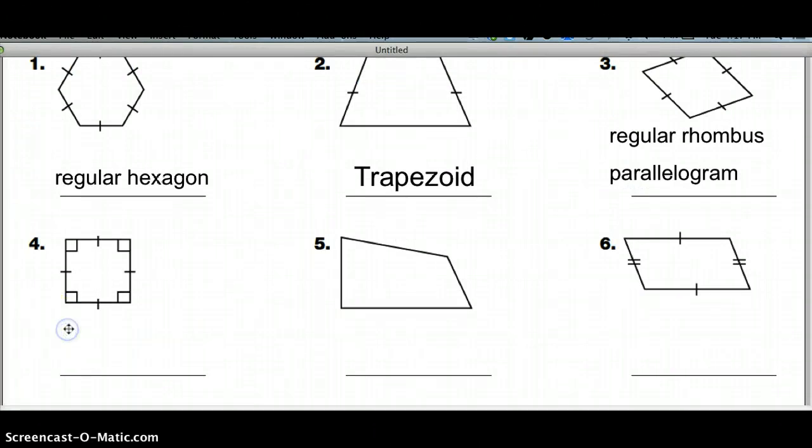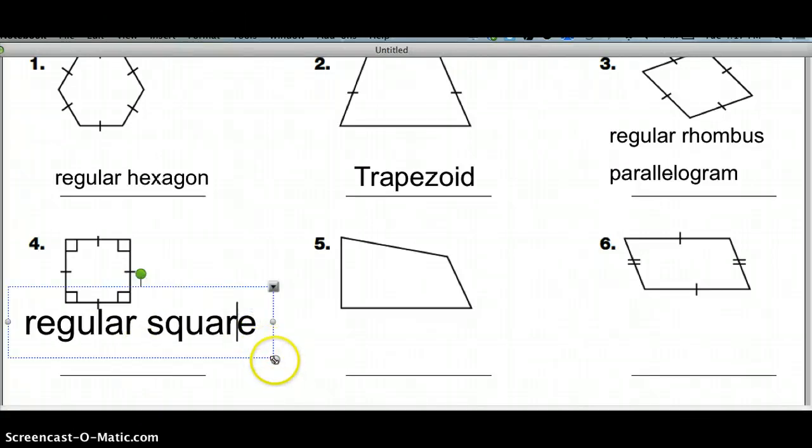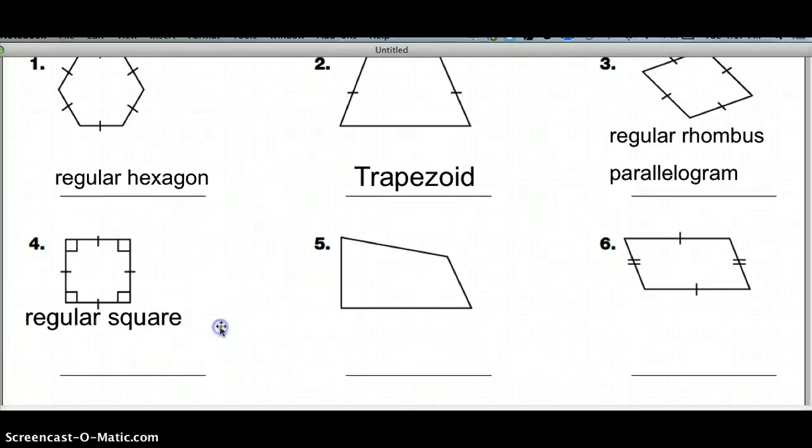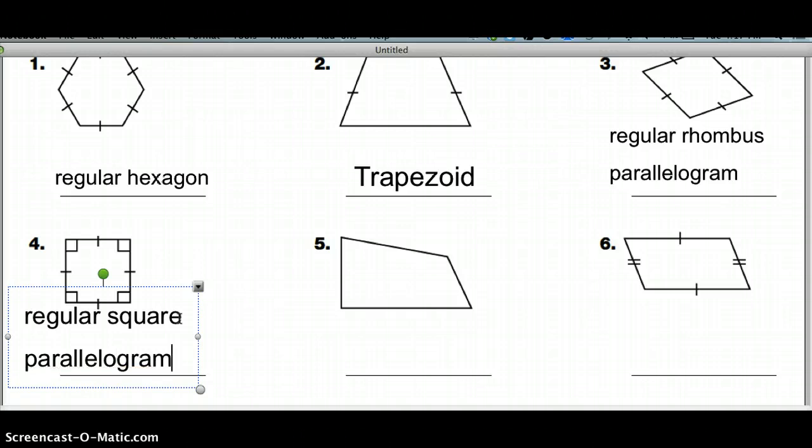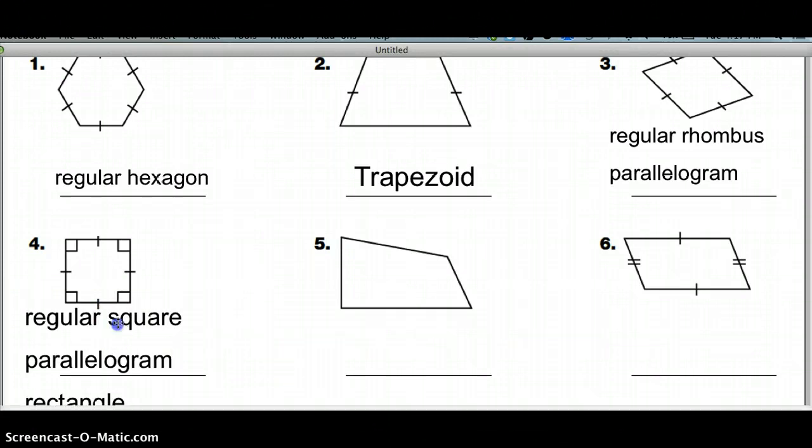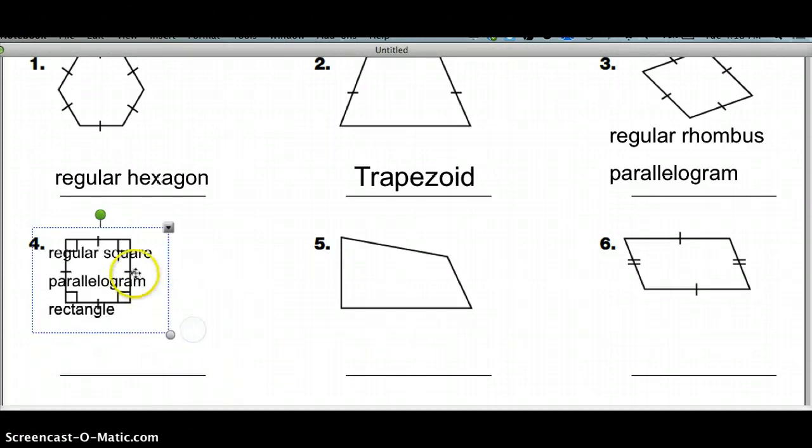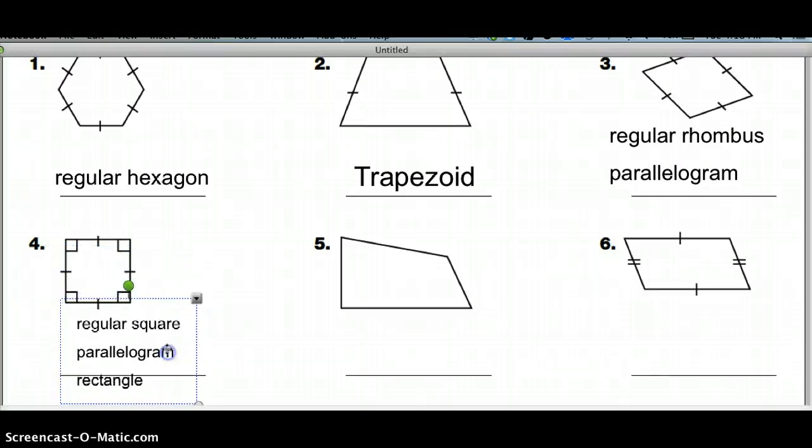Number four. It has two pairs of parallel sides. All sides are equal. All angles form 90 degrees, which makes this one a regular square. All squares are regular. This also has two pairs of parallel sides, so it can also be called a parallelogram. This is also a rectangle. Remember all squares are rectangles, but not all rectangles are squares. This is the three things you could have there.